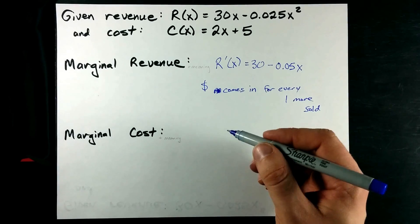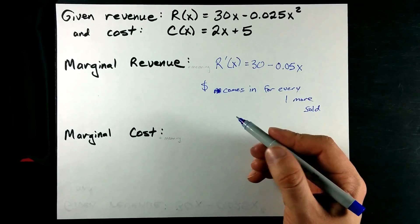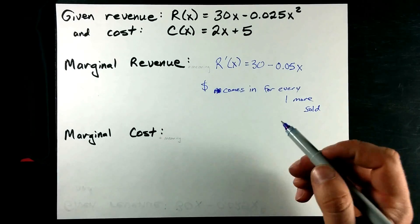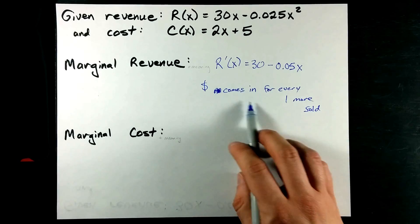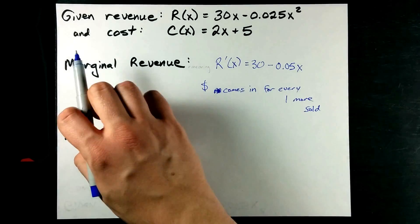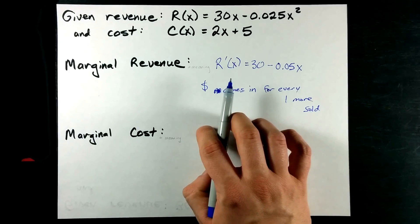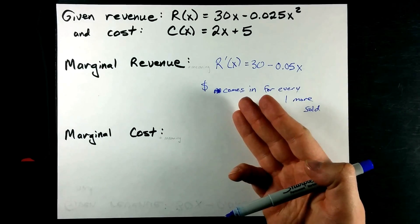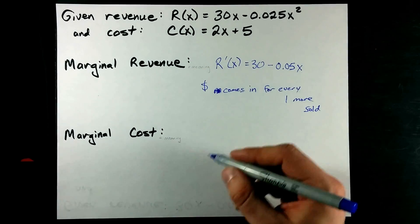Obviously, you might want to keep making them as long as you continually make money per one that you sell. Really, though, marginal profit is what you want, because you just want profit to be positive, right?